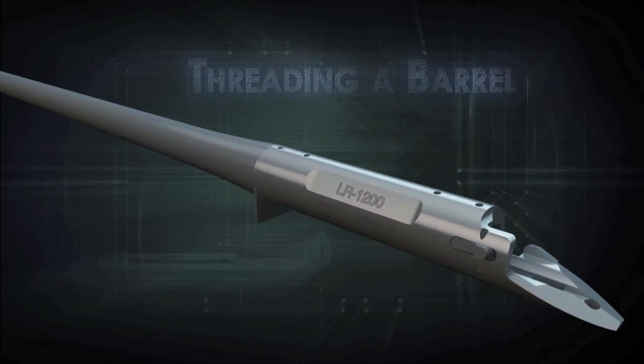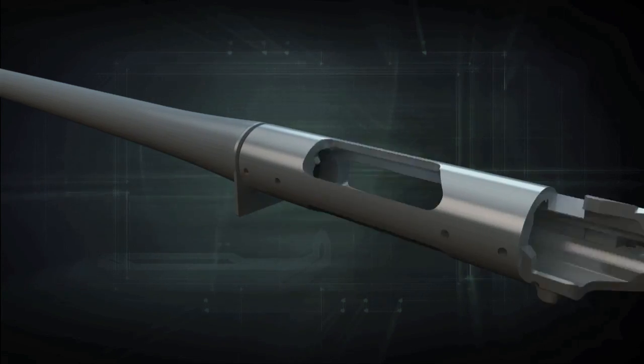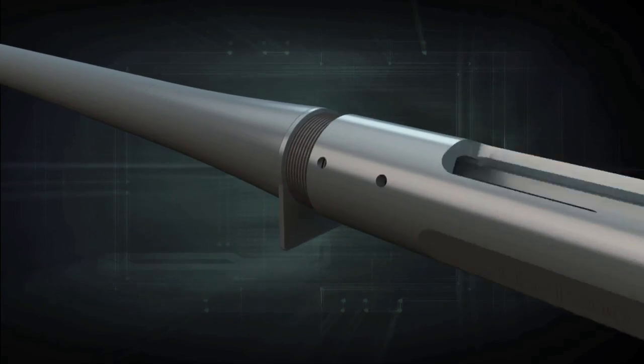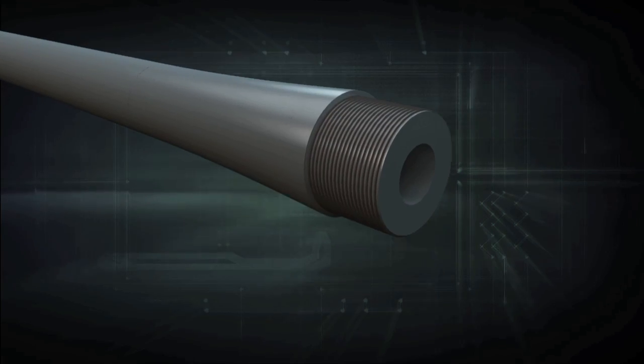The barrel thread joint connects the rifle barrel to the action. For the best long-range accuracy, this thread joint must have a precise fit and perfect finish.